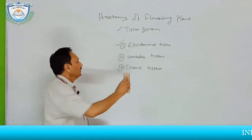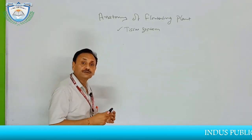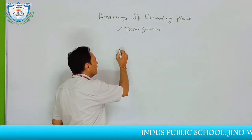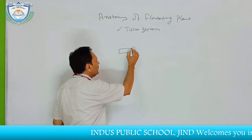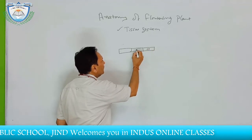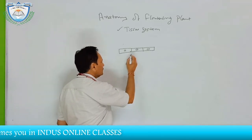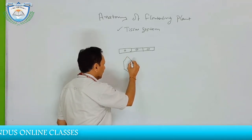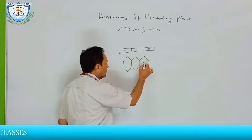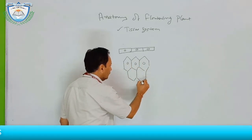In this particular tissue, especially in the stem and leaf — in the stem, we will see that the cells of this particular tissue are compacted. There is no intercellular space in this particular tissue and they have a well-defined nucleus. These cells may be hexagonal or polygonal but have a well-developed nucleus.